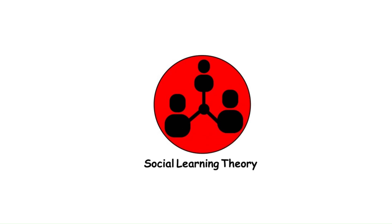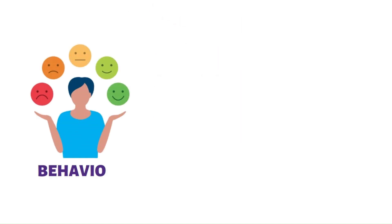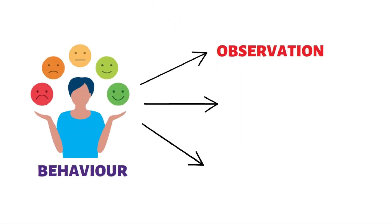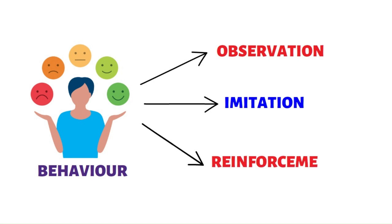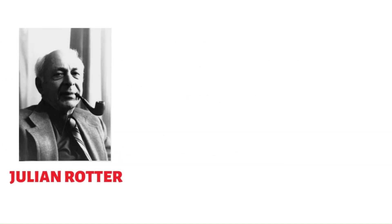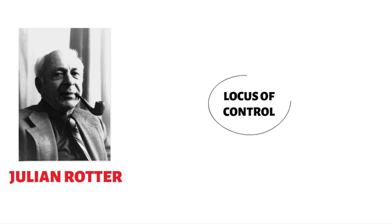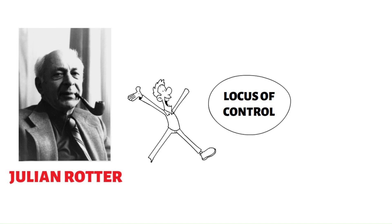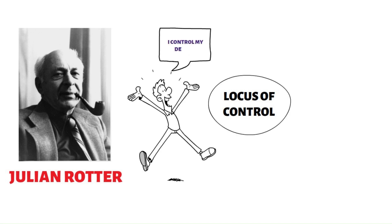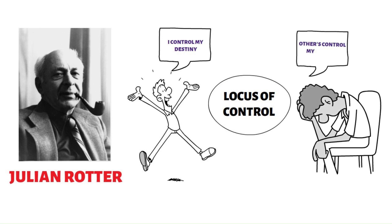Social Learning Theory suggests that behavior is learned through observation, imitation, and reinforcement. Julian Rotter proposed the concept of locus of control, suggesting that individuals' beliefs about the extent to which they can control their own outcomes influence their behavior and personality development.